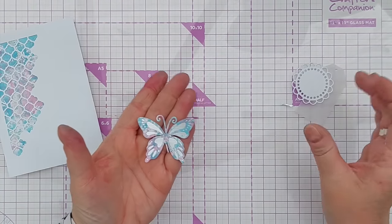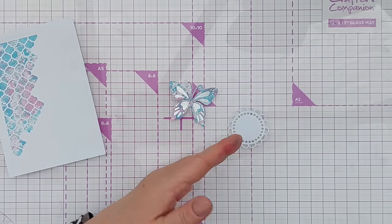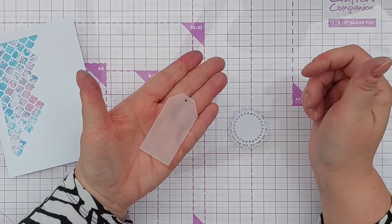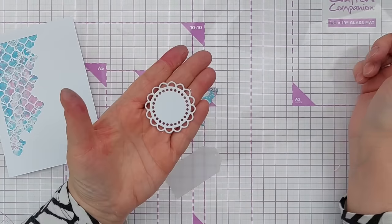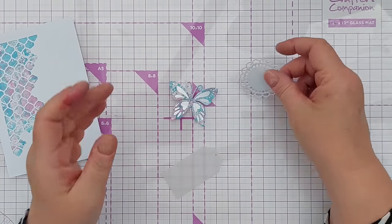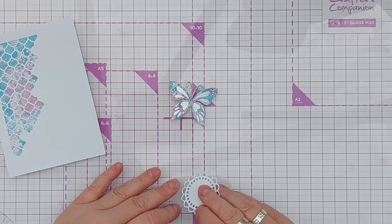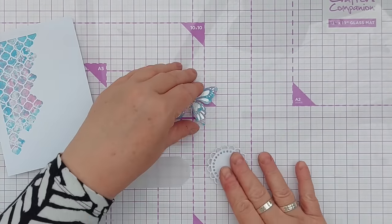So there we go, a pretty little silvery butterfly. I've also cut a tag out of vellum and a doily out of white cardstock and I'm going to use them as layering pieces behind my butterfly.